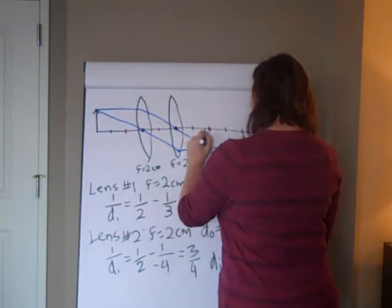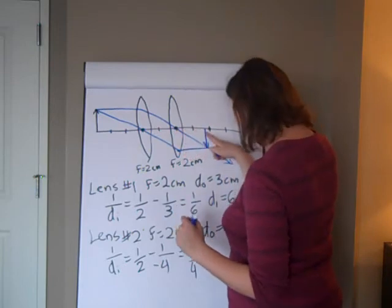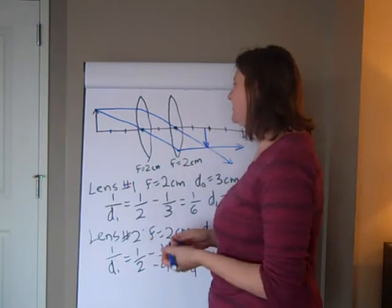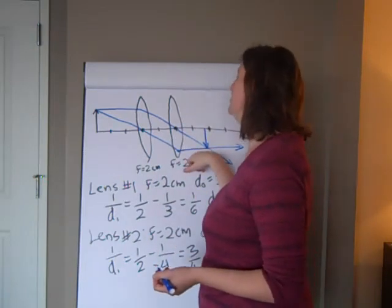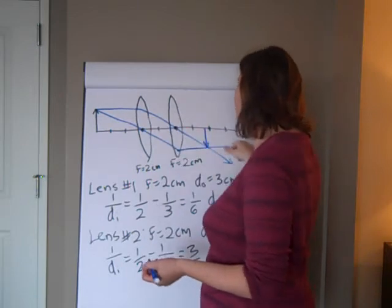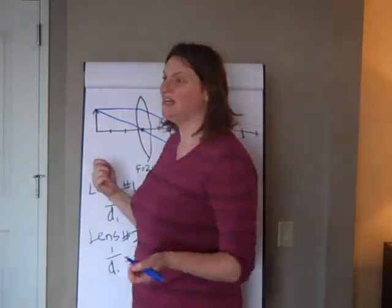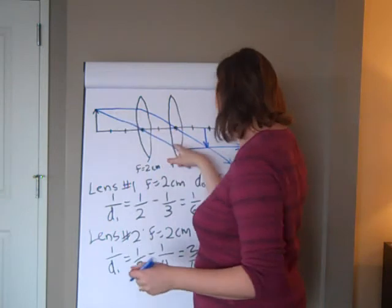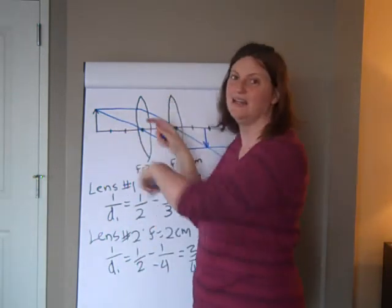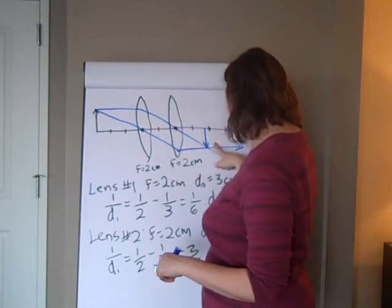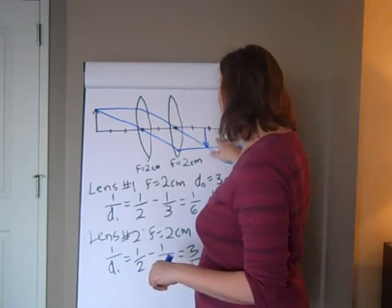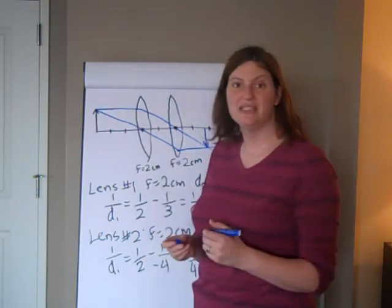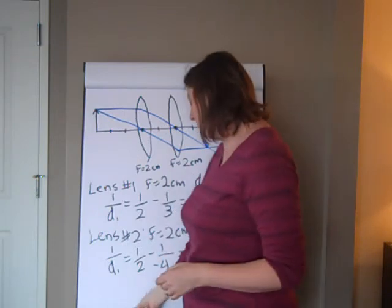In this case we've got an image that is a little bit more than one — it actually looks like one and two thirds instead of one and one third, but when you draw it you're just trying to get an estimate. Notice that this is a real image because the light actually hits it. We can't say it's real because it's upside down, since with two lenses it could go either way. But it's real because the light actually goes to it — we don't have to extend dotted lines to find the image. It is upside down.